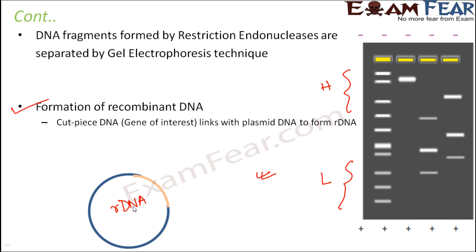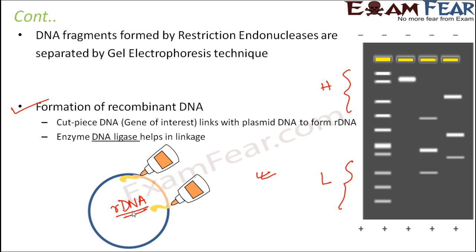The recombinant DNA has two very important features: first, it contains our gene of interest; second, it has the capability of self-replicating independently. Because of these two features it is special, and it can be directly introduced into the host cell. During the formation of recombinant DNA, DNA ligase enzyme helps in the linkage — it acts as a glue to stick the cut piece of DNA into the plasmid DNA.